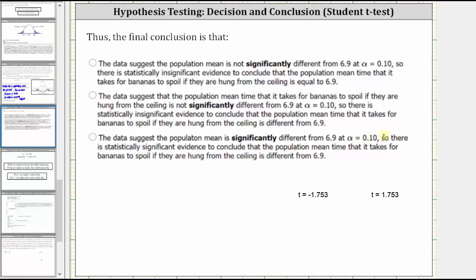So there is statistically significant evidence to conclude that the population mean time that it takes for bananas to spoil if they are hung from the ceiling is different from 6.9, which is the third option.